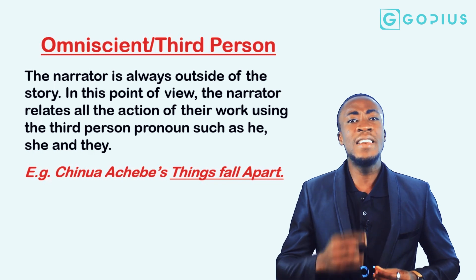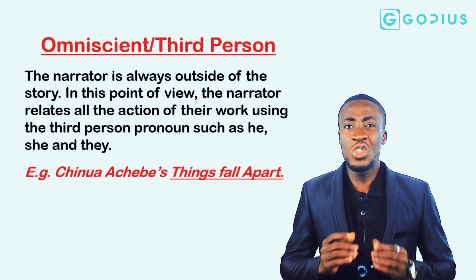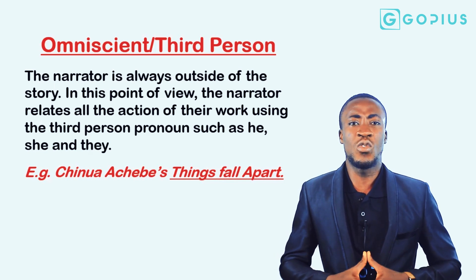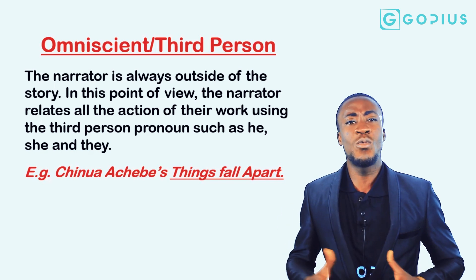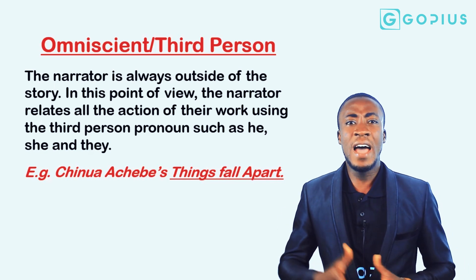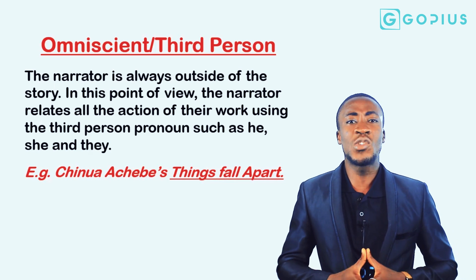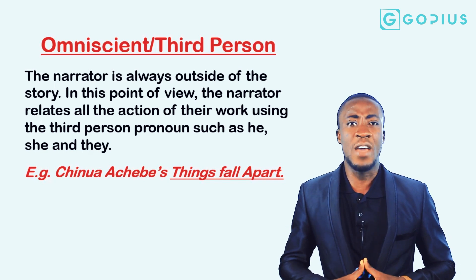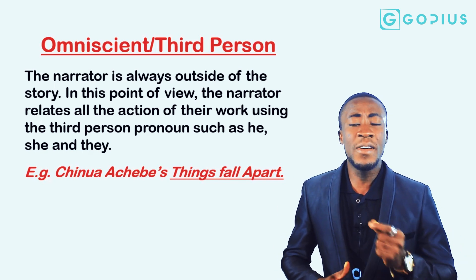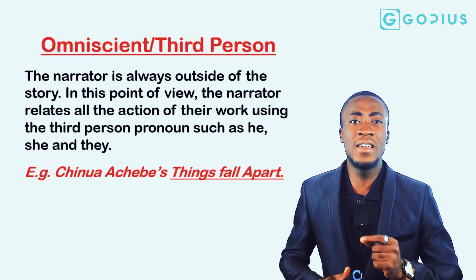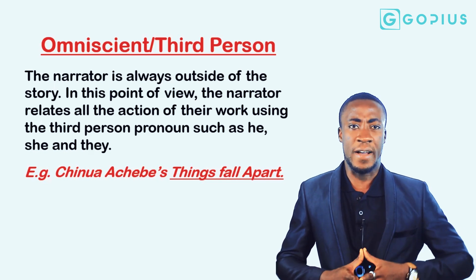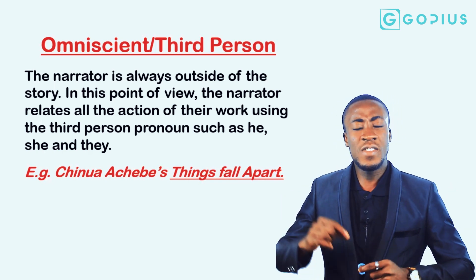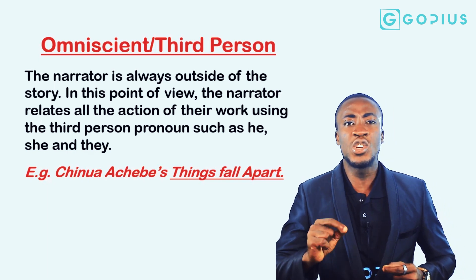A practical context in this work reveals that when Ikemefuna, a prisoner of war, was entrusted in the care of Okonkwo, he had a soft spot for the boy. At the point when they were expected to kill the boy, one of the men struck him, and the young man ran to Okonkwo saying 'Father, they have killed me.' Okonkwo pulled out his knife and hacked him down. The narrator then tells us that Okonkwo did this because he never wanted to be thought weak.